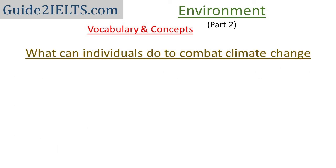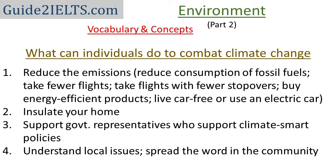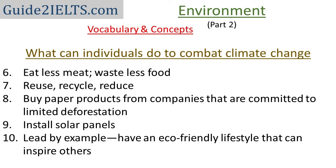Now, a list of what individuals can do to battle climate change. First, reduce emissions in your life — take fewer flights or direct flights instead of ones with many stopovers. Buy energy-efficient products. Live car-free if possible, or use an electric car. Insulate your home, since poor insulation means more air conditioning and heating. Support government representatives who support climate-smart policies. Understand local issues. Spread the word in the community. Eat less meat. Waste less food. Recycle when possible, but prefer to reuse and consume less. Buy paper products from companies committed to limiting deforestation. Install solar panels in your home and workplace.